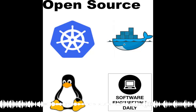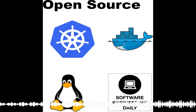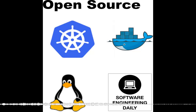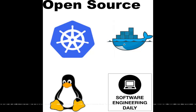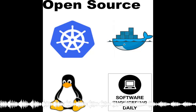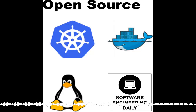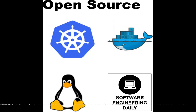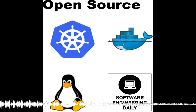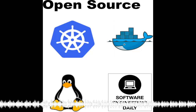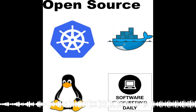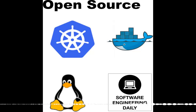Kubernetes solved more problems than it introduced, but it did make some problems more important to consider. You talked about container networking — Kubernetes solved a lot of the deployment issues that Docker hadn't solved, and a lot of the centralized management issues. What are the newer difficulties that Kubernetes users had to encounter?